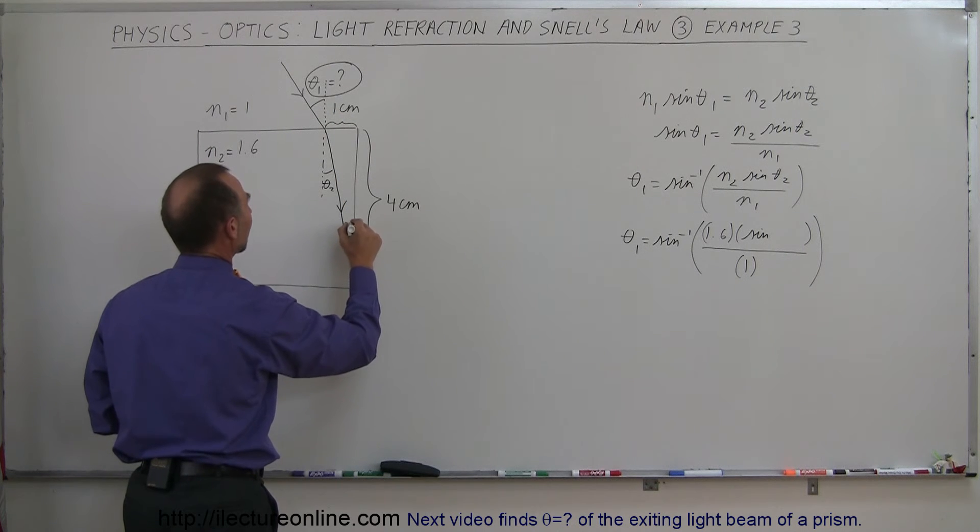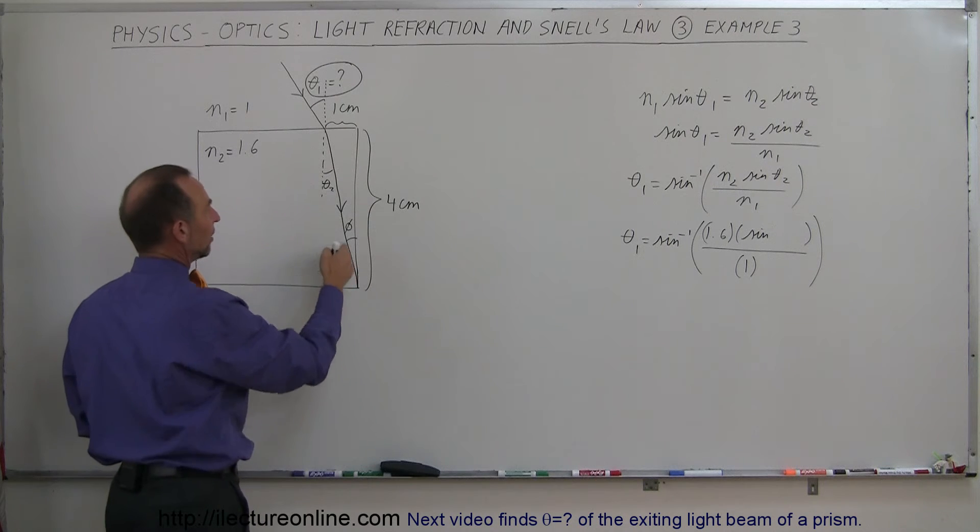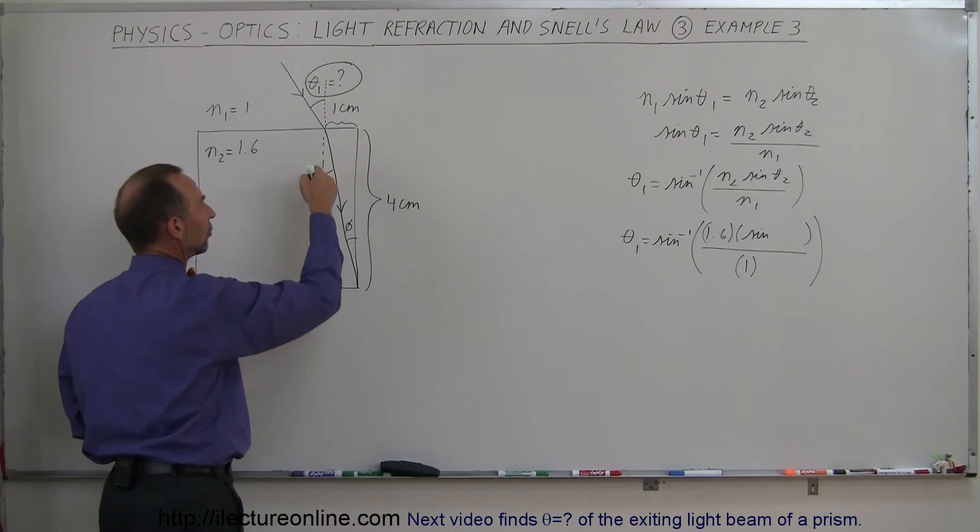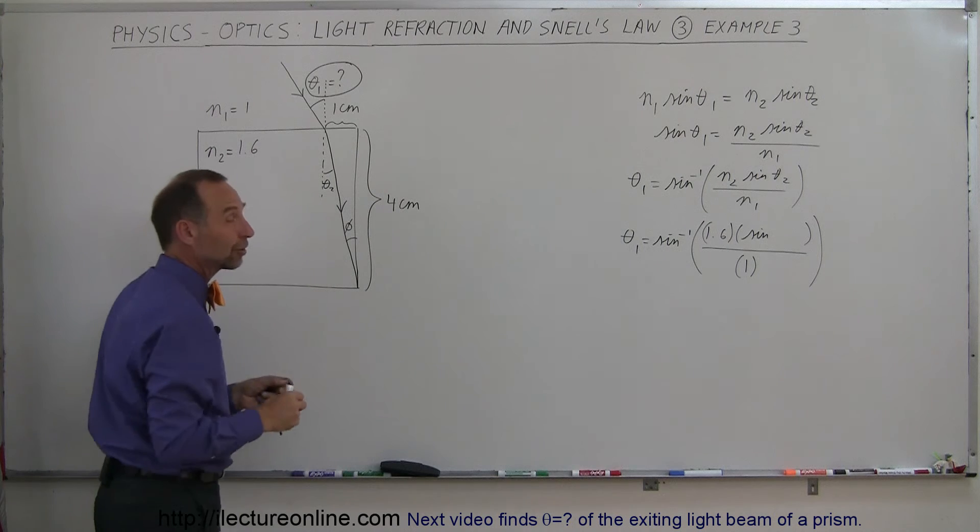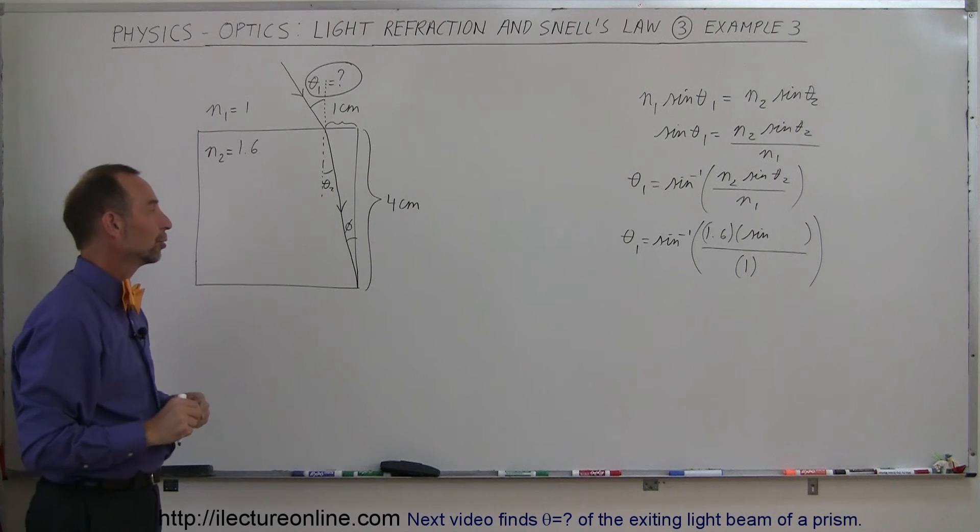And you can see that these then become alternate interior angles, so phi and theta2 are the same angle. So when we find phi, we find theta2.